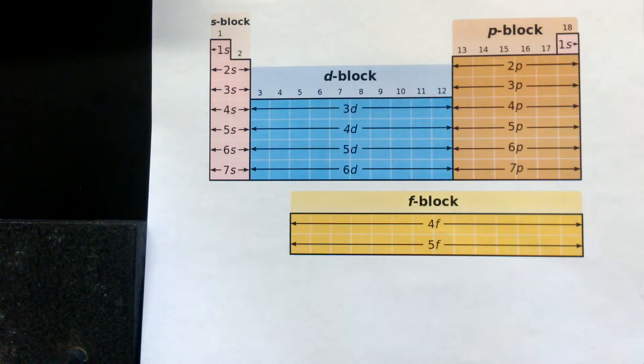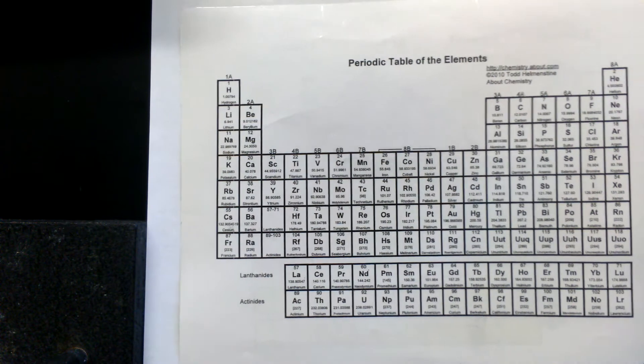Now in class we discussed each one of these and I showed you some three-dimensional shapes that the s and the p and the d and the f orbitals take. But let's take a look at how we assign the electron configuration to an atom. First let's start with a simpler element.